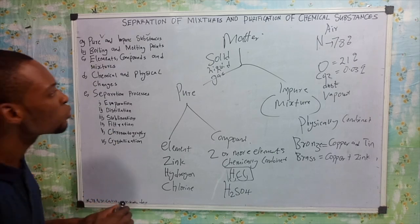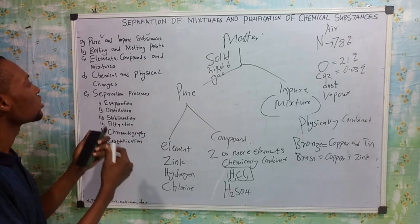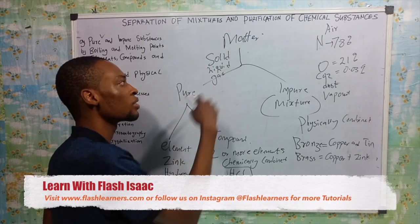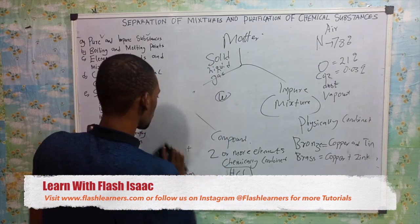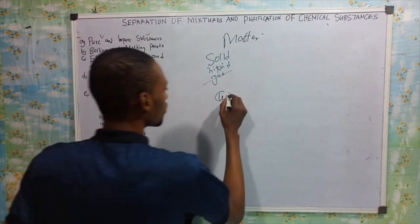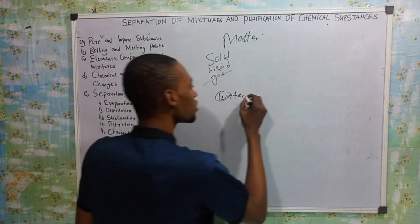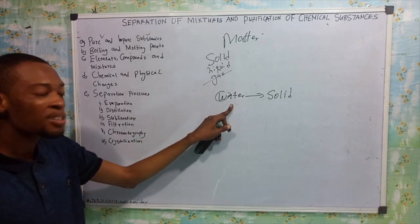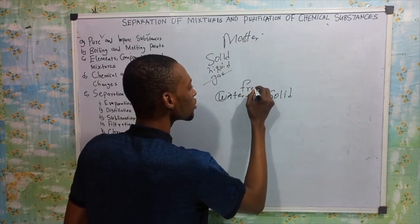So, boiling — liquids boil. Boiling is a property of liquid. It is the temperature at which a liquid changes to vapor. Solids can change to liquid, and liquid can change to gas. Using water as an example: when you put water in your freezer and turn it on, after some time it becomes solid — it has changed from liquid to solid. This is called freezing.